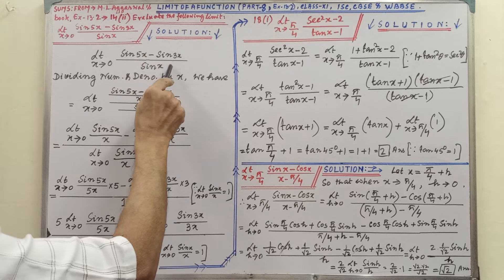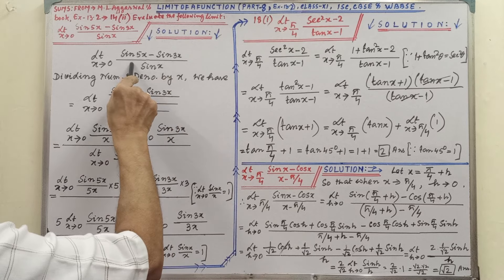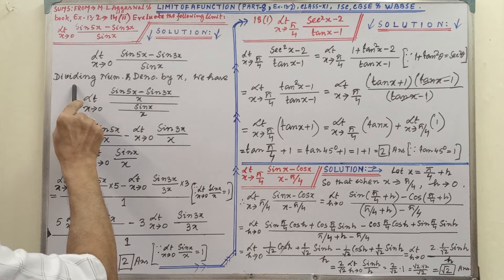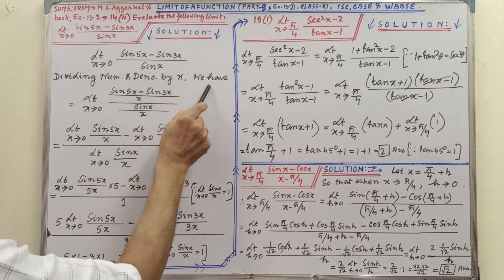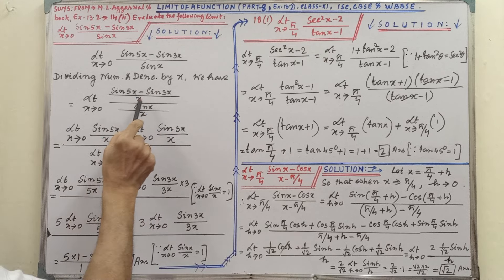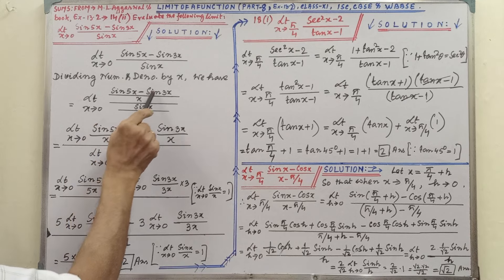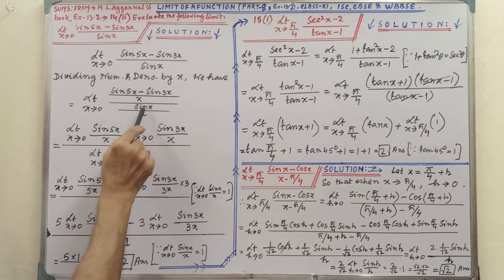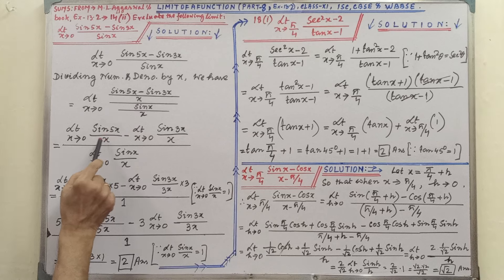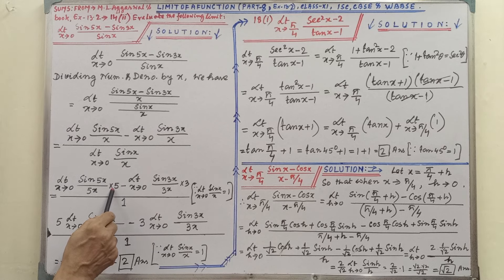After looking at the expression, you have to think whether it is in the frame of the formula or not. It is not exactly in the frame of the formula. This is why, dividing the numerator and denominator by x, we are splitting in terms of sin 5x by x and sin 3x by x, and sin x by x. Here, if we get 5x, then we will get the frame of the formula.